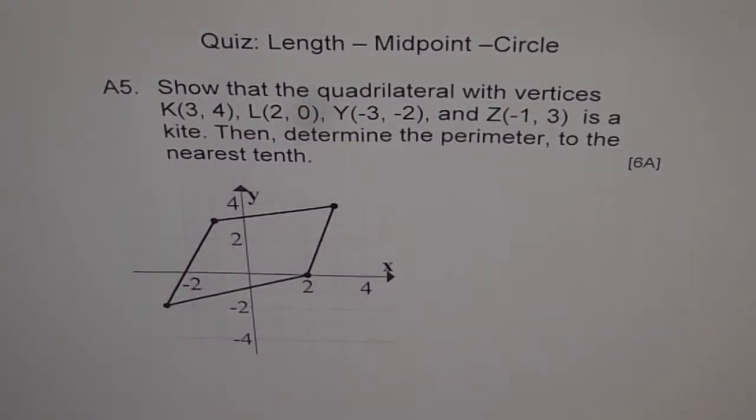Here is the application problem A5 on length, midpoint, and circles. Show that the quadrilateral with vertices K(3,4), L(2,0), Y(-3,-2), and Z(-1,3) is a kite. Then determine the perimeter to the nearest tenth.